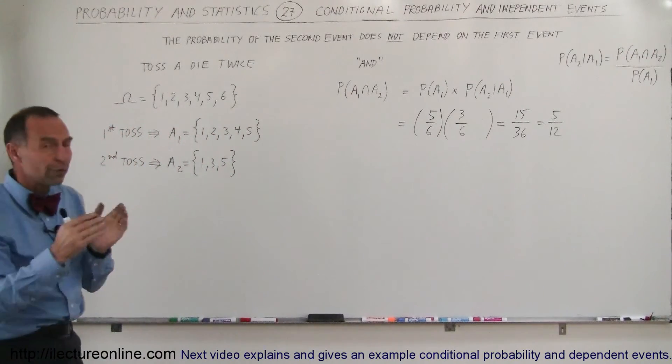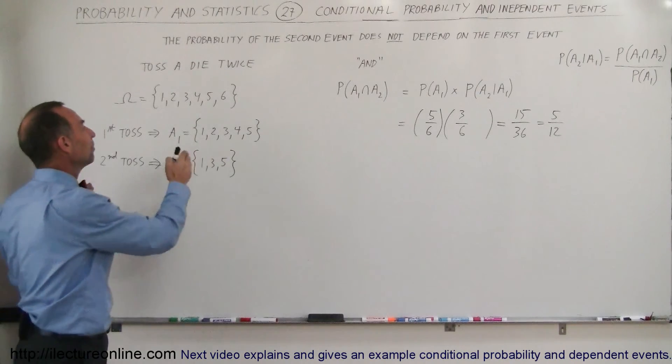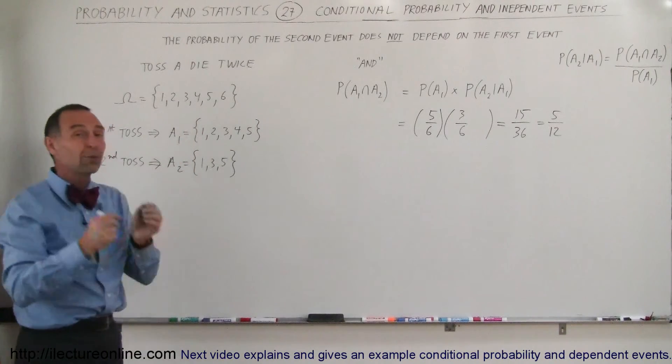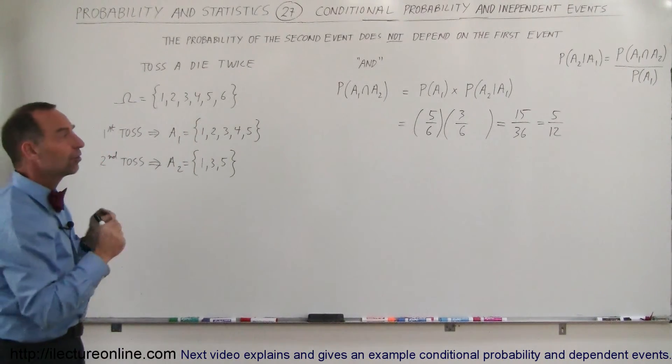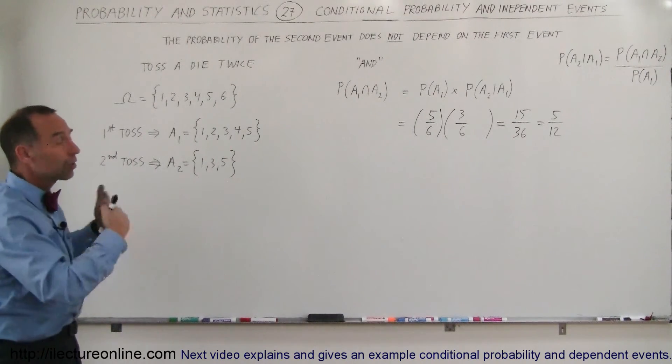So here you can see that the two events are completely independent of one another, and therefore, we can simply ignore what happened in the first event when we try to find the probability of the second event. And that's what we mean by independent events and conditional probability.